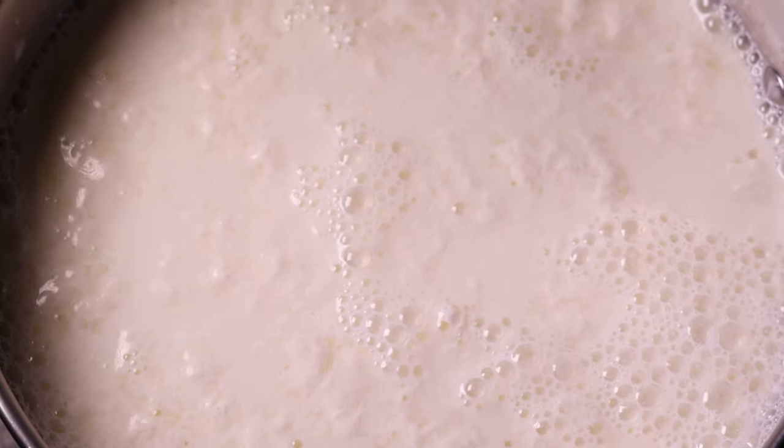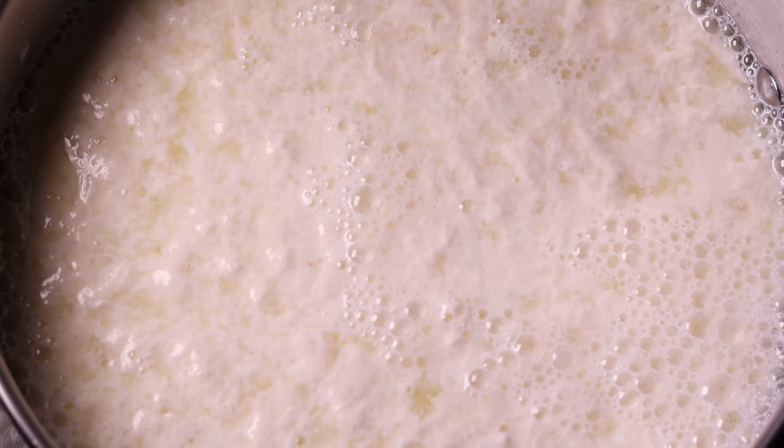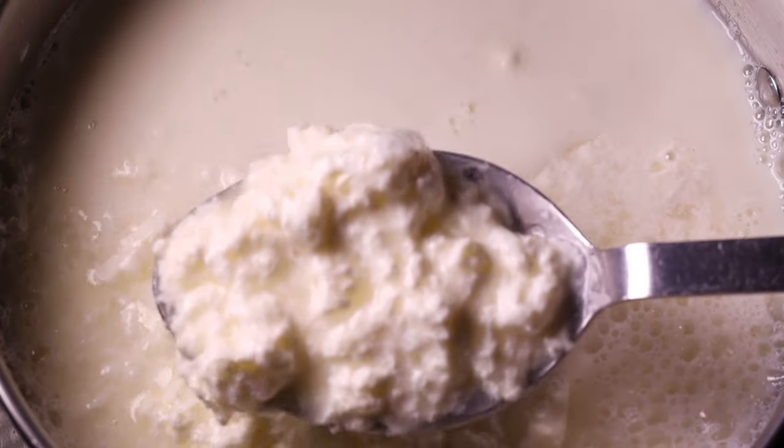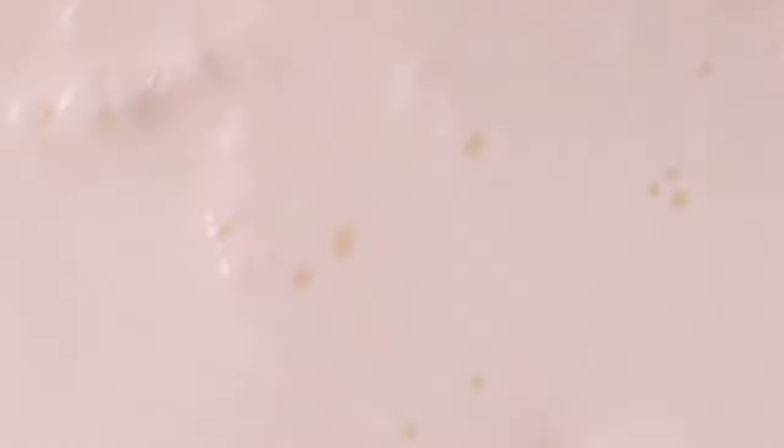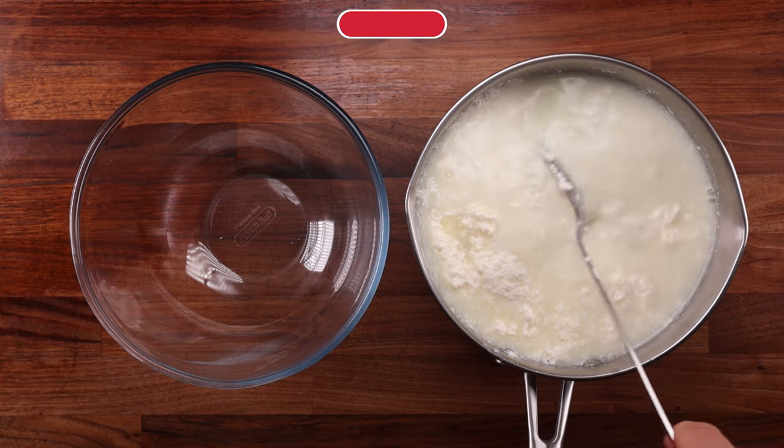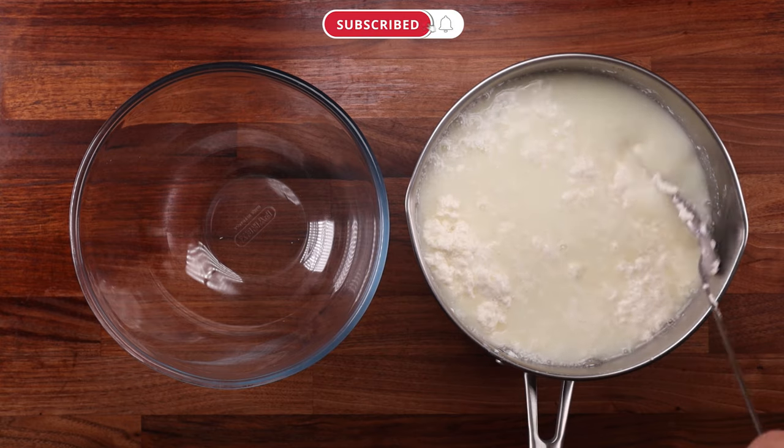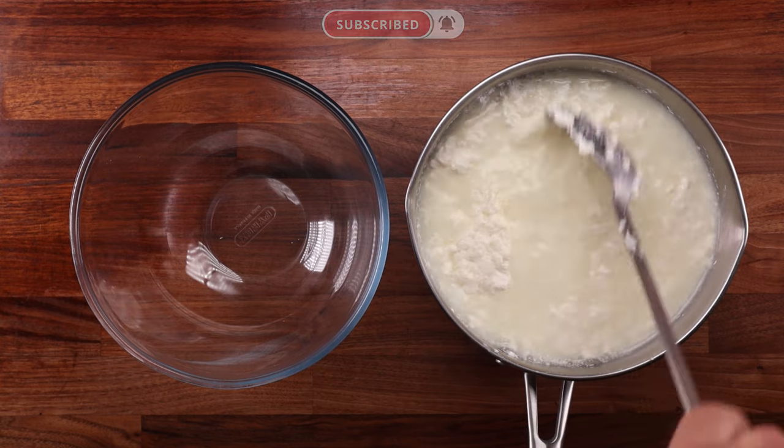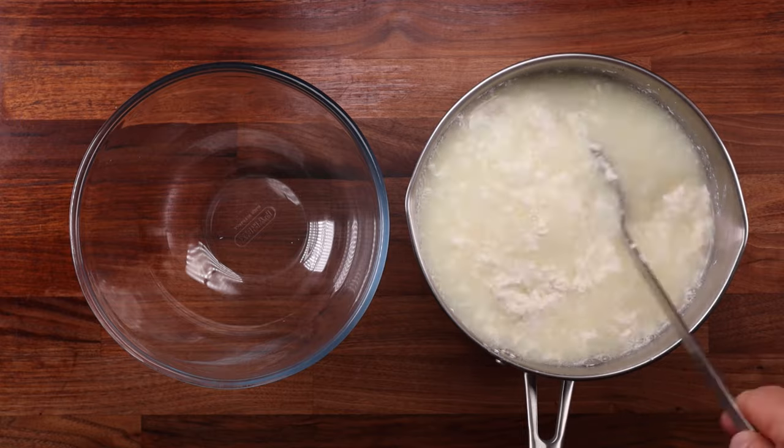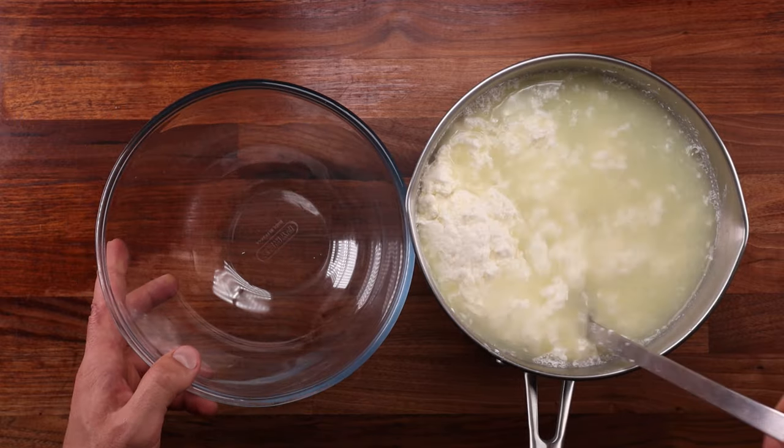During this time, the curd will separate even more. That way, we'll get the most out of our milk. After 5 minutes, it should look nice and chunky just like this. Okay, next up, we need to try and get as much whey out of the curds as possible. Start by collecting and pressing the curd against the side of the pot. As you do this, the whey will turn from white to slightly yellow.